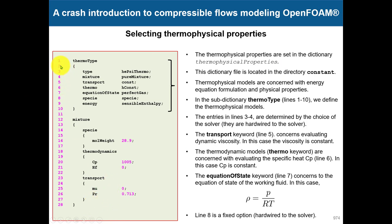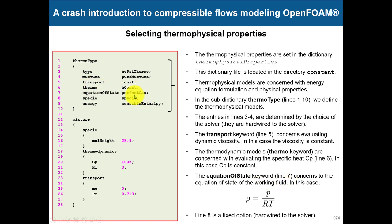In the thermophysicalProperties dictionary, from entries one to ten you choose the thermoType. These are the equations and models being solved. Line seven, for example, is your equation of state — here we use perfectGas, which is the ideal gas law. Use tab completion to get all possible options, but most of the time you will use perfectGas.